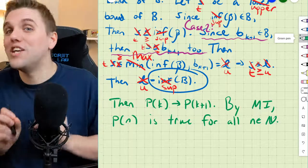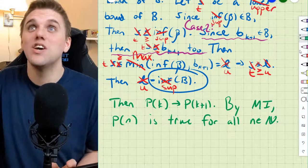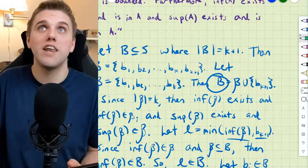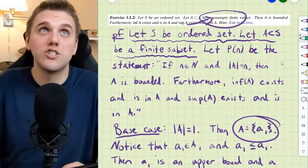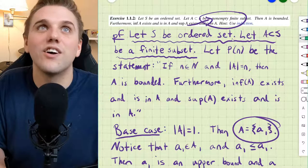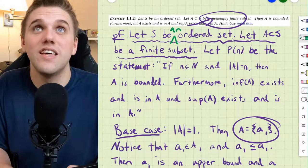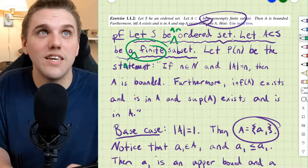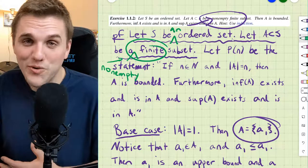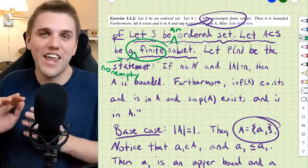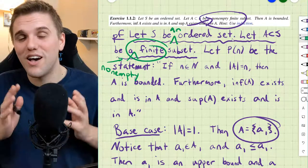I want to clarify: we did not prove that P(N) is true by itself for all natural numbers N — we did have assumptions in this proof. Those assumptions are: let S be an ordered set, and let A be a non-empty finite subset of S. That finishes this proof. I'll see you all in the next video.